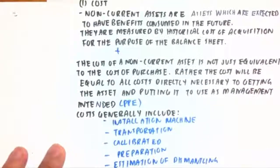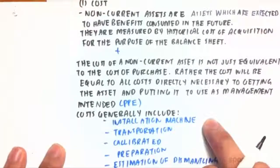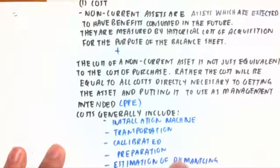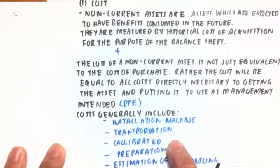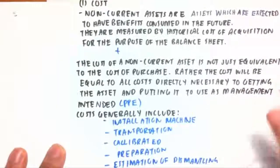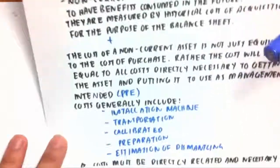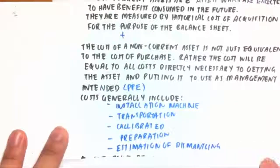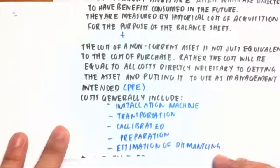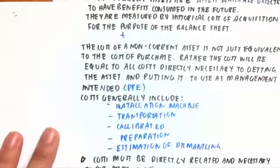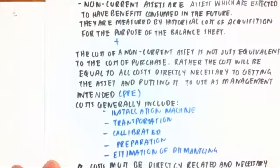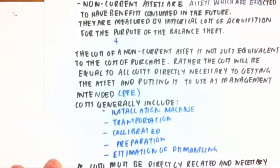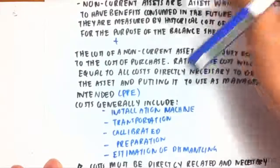The costs generally included are: installation of the machine, transportation of that machine to the place necessary, calibration of that machine so that it is ready for use, preparation of the site so that the machine can be installed, and also the estimation of dismantling the machine at the end of its useful life. The cost must be directly related and necessary to put the asset into use.